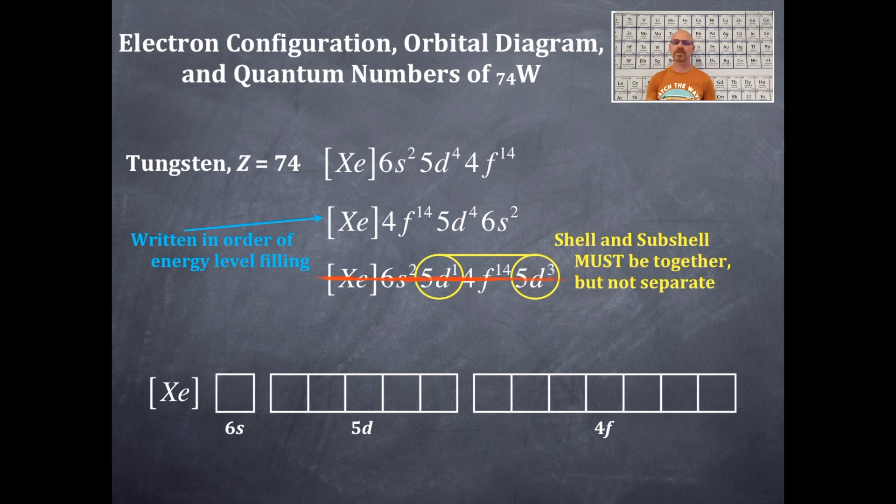Okay, orbital box diagram of the same thing here. Okay, 6s2, 5d, and the 4f. We're going to fill it in the order in which those electrons were filled. Think about that. So, we've got it up. We've got it down. Okay, then it's the 5d1. Okay, now, after 5d1, what comes next?